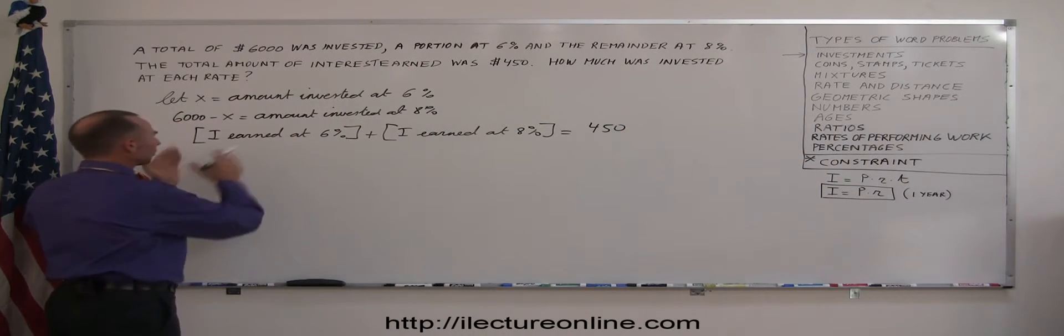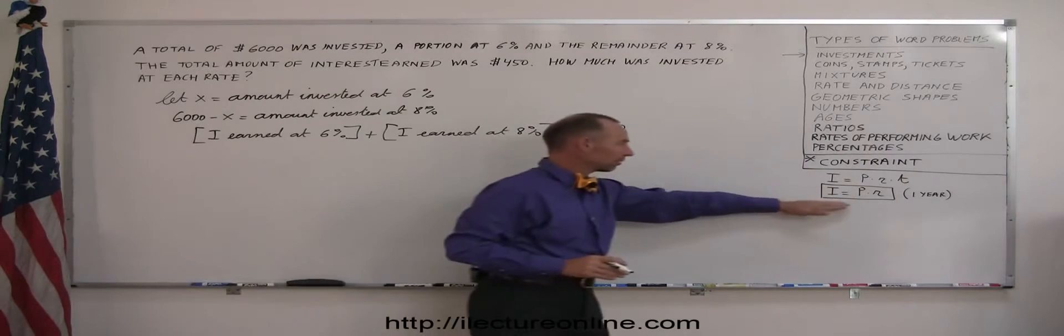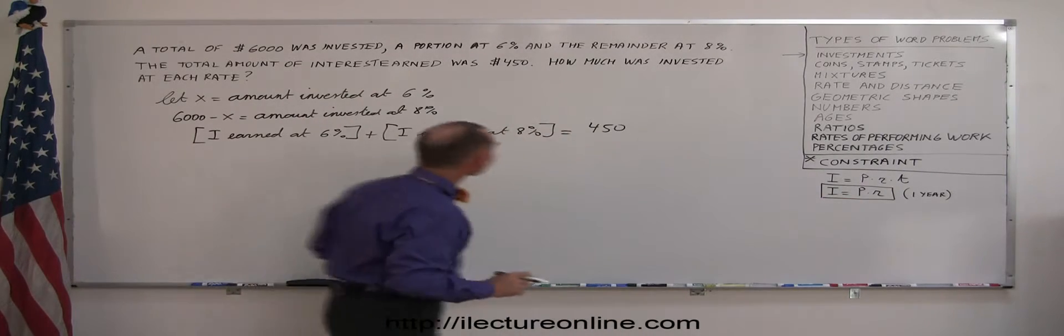Interest earned at 6% plus interest earned at 8% should add up to the total of $450. And how do I express how much interest earned? Coming back over here, it's the principal times the rate.